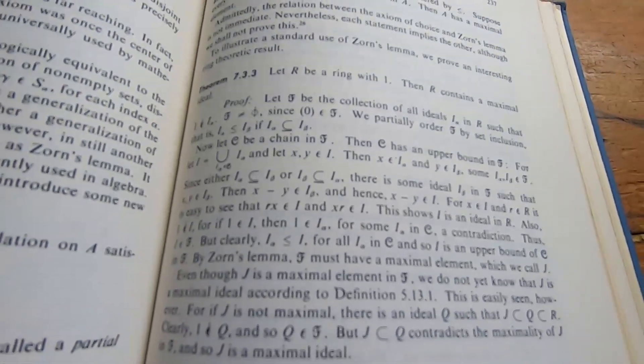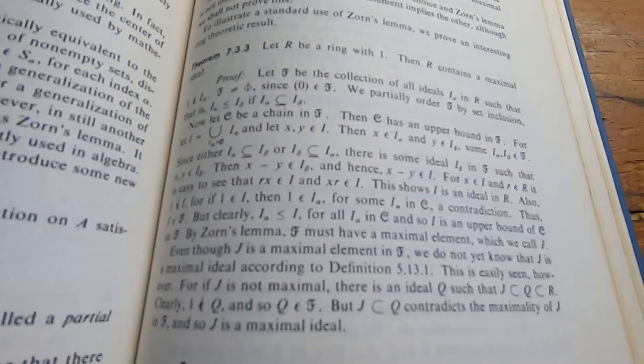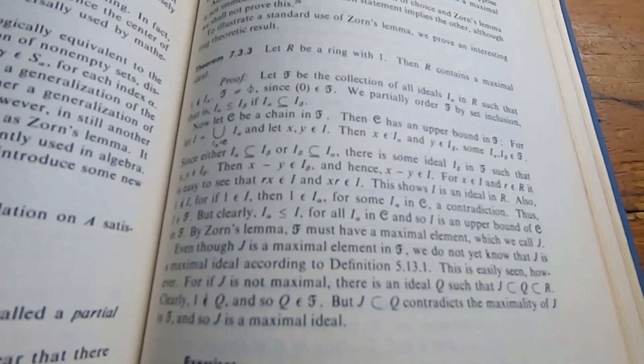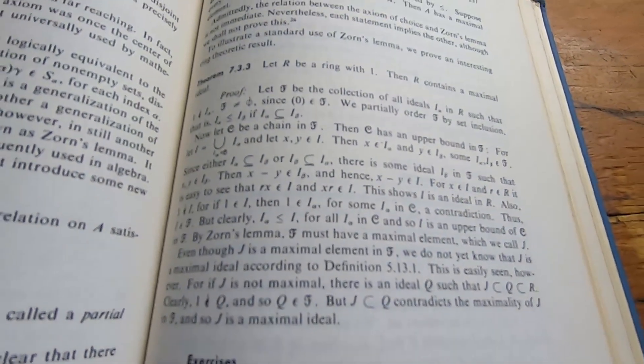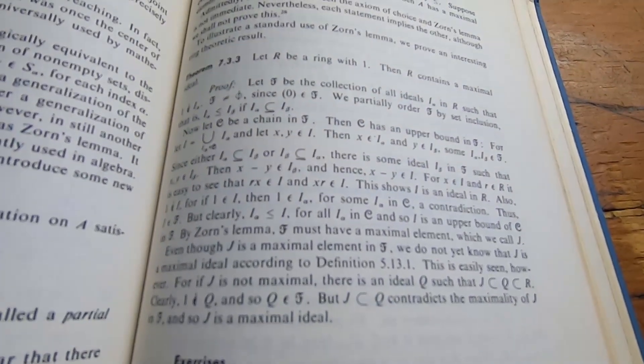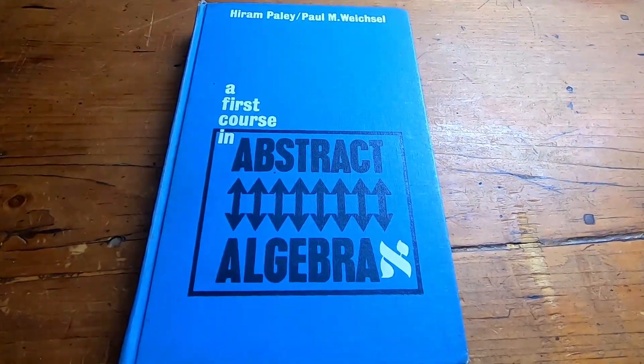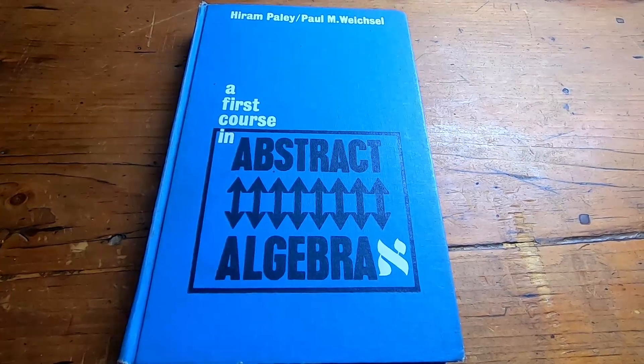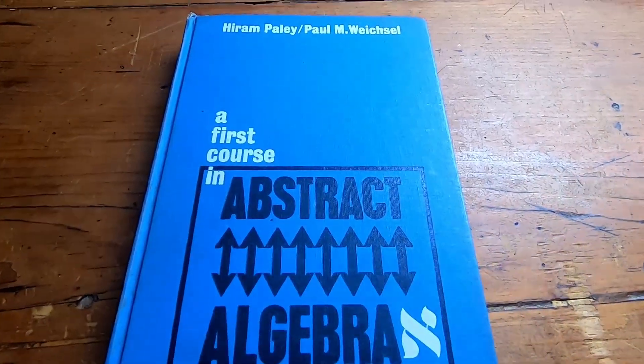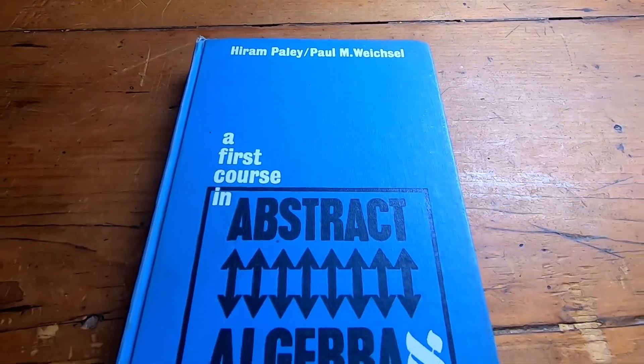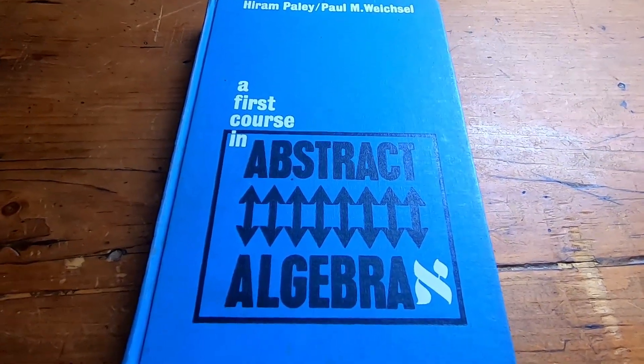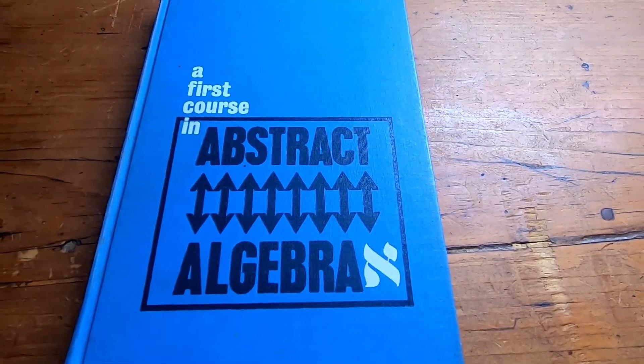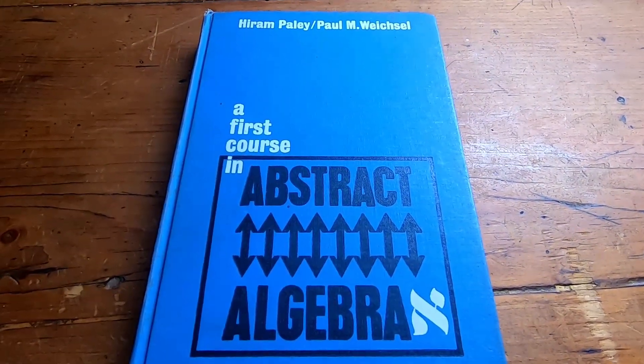And again, this is something that would often be skipped in a typical first course in abstract algebra. So, if you're looking for another book on abstract algebra, I highly recommend this one. So, who is this book for? I think this book is for anyone who wants to learn abstract algebra and anyone taking abstract algebra. Now, if you're looking for a beginner book on abstract algebra, I would say get this one and then get a couple more. I don't think this one is enough.